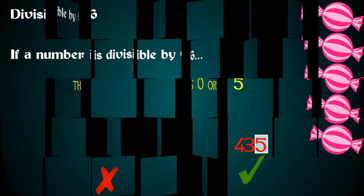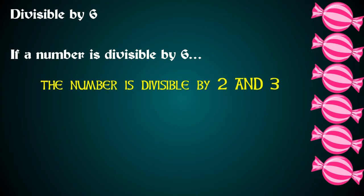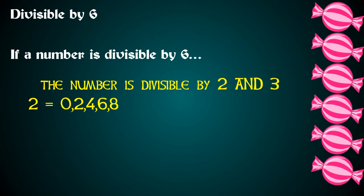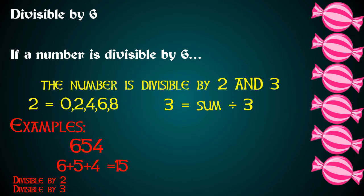Now, let's take a look at numbers that are divisible by 6. If a number is divisible by 6, the number is also divisible by 2 and 3. Remember, numbers that are divisible by 2 end in 0, 2, 4, 6, or 8 — they're even numbers. And numbers that are divisible by 3 have a digit sum that is also divisible by 3. Let's look at 654. It ends in 4, so it's divisible by 2. And 6 plus 5 plus 4 gives us 15, which is divisible by 3. So 654 is divisible by 6.